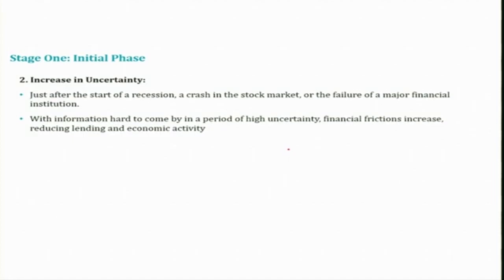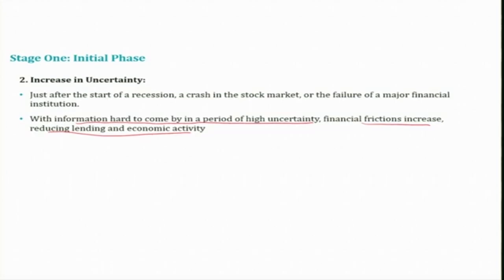When uncertainty is high, information will be very hard to come by. This leads to increased financial friction, which further aggravates the asymmetric information problem, and which reduces lending and economic activity. These are all the factors that normally happen in Stage 1 of a financial crisis.